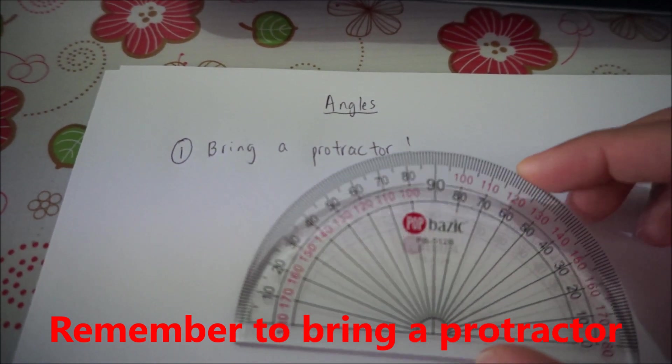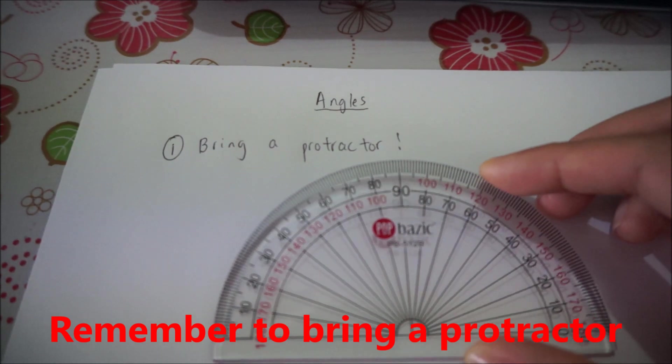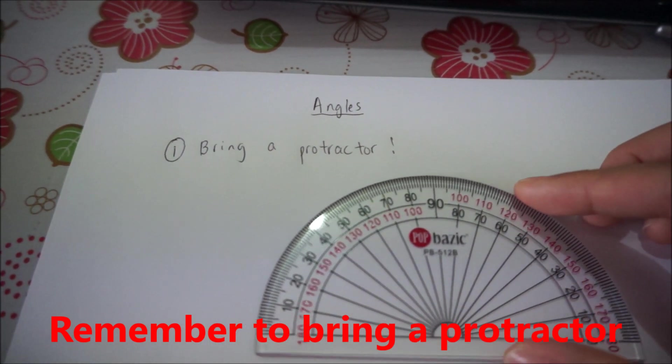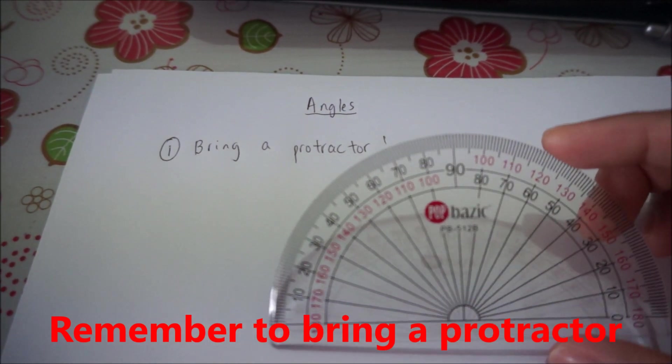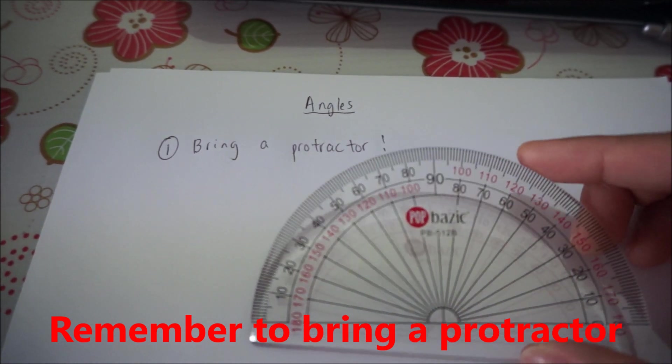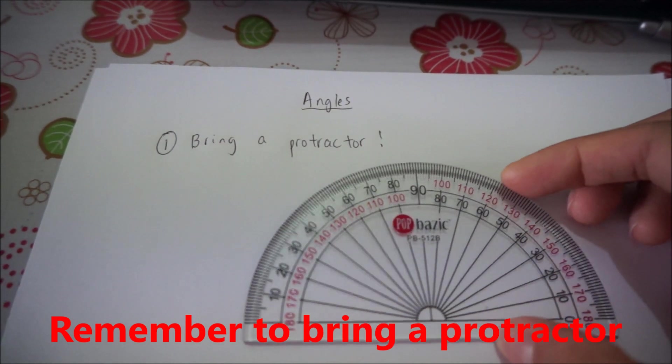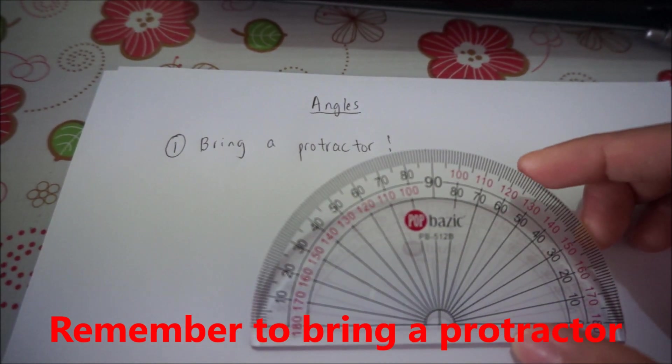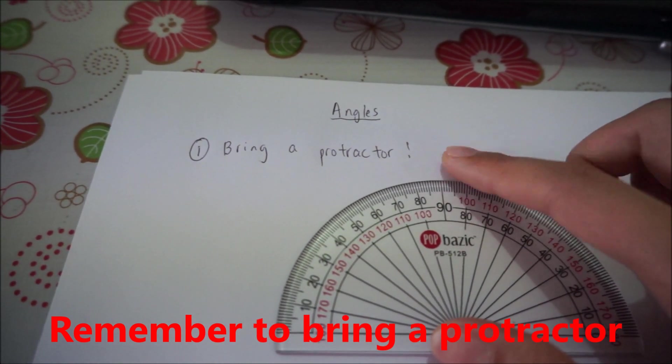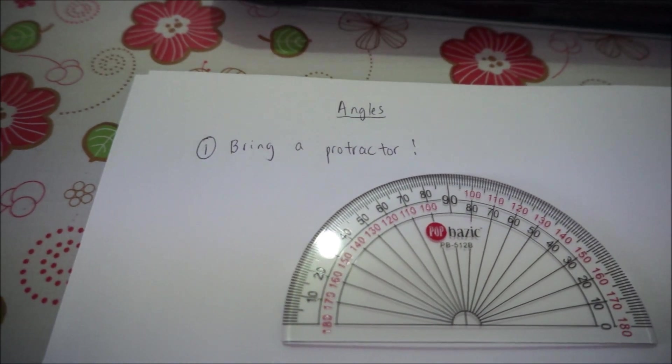And this is what a protractor looks like. If you don't have a protractor, please go and get one. You can buy this - I got this from Popular for 45 cents. You can also get it from the bookshop or any other bookstores. They're all the same, but this is basically what a protractor looks like. Please write down in your handbook to bring a protractor.